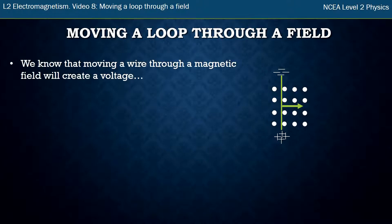In the last video we looked at moving just a single piece of wire through a magnetic field and we found that creates a voltage.